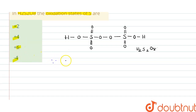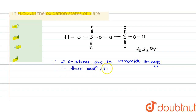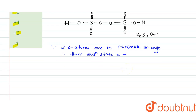Since two oxygen atoms are in peroxide linkage, their oxidation state is equal to minus one. The oxidation state of the remaining six oxygen atoms is equal to minus two.